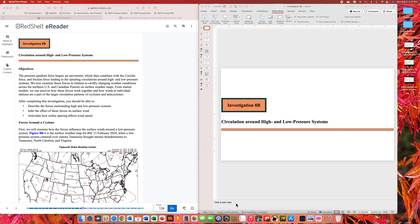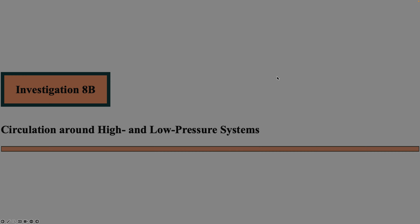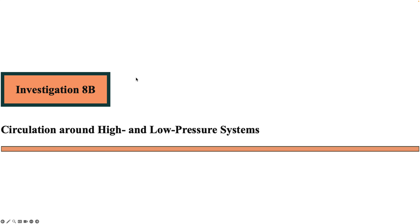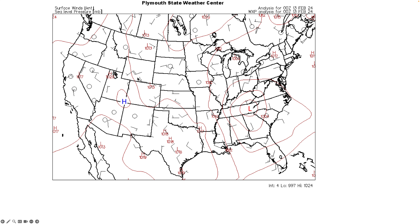I gave you pretty much all the building blocks that you need in my discussion in Investigation 8A. So what we're going to do here — I don't know how long this video is going to last because a lot of it's going to be rehashed from Investigation 8A — but let's get started. Starting with the PowerPoint, Investigation 8B: circulation around high and low pressure systems.